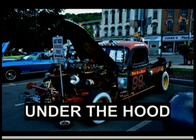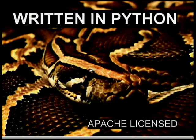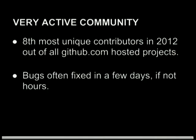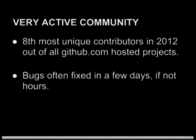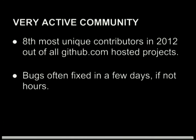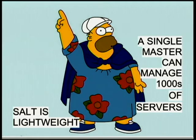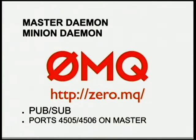So that's kind of remote execution — you can see it's pretty simple. There's a load of modules built into the system. Under the hood, Salt is written in Python, it's open source, Apache licensed, and it's got a really active community. It's a GitHub project — actually in the top 10, number 8 for most unique contributors to any project. When I've found a bug and report it, more often than not it's already been fixed in master, or it's fixed in a couple of days if not hours. Salt is really lightweight — it scales to thousands of servers from a single master. It communicates using ZeroMQ. There's a master daemon running on the master, and each minion has its own minion daemon. There's pub-sub communications running on port 4505 on the master — those are the two ports you need to open. You don't need to open any ports on your minion. Port 4506 is used to communicate back to the master.